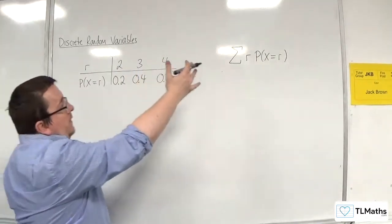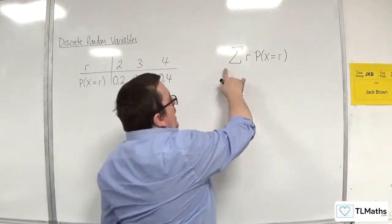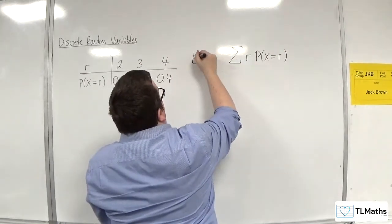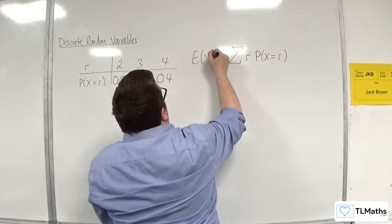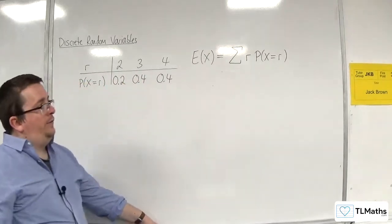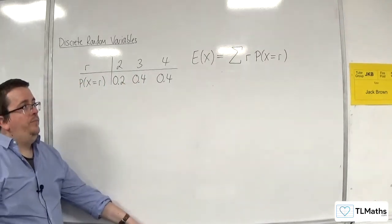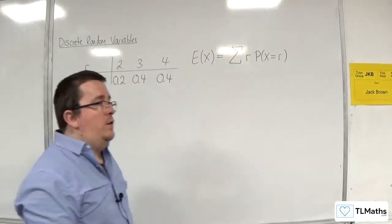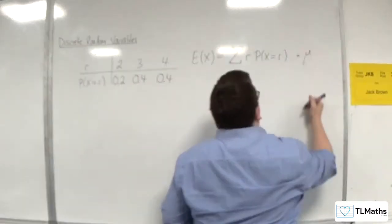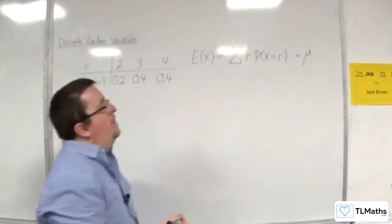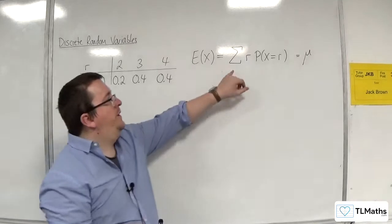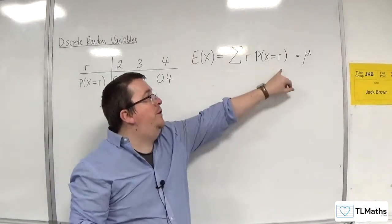That sum alone is what we refer to as E of x, the expected value of x. You can also write it as mu — sometimes you'll see it written as mu. But that is how you calculate it.